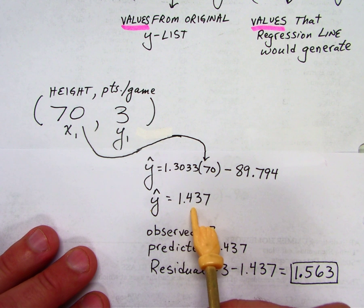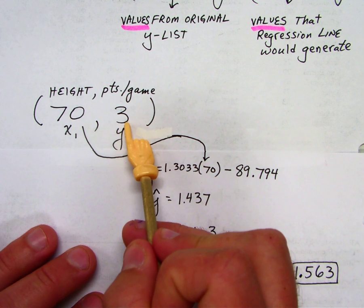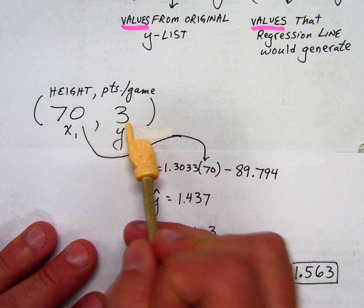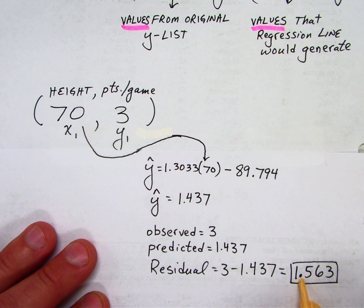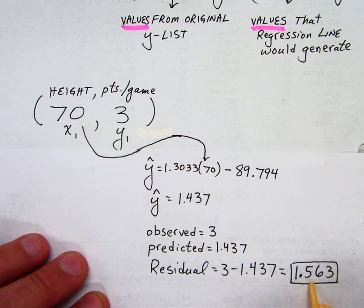Now this is the predicted value. This is my actual value. This is the one that I observed. This is the one that is predicted. So you would simply say that the residual for this one particular point is 1.5. So that is one residual.